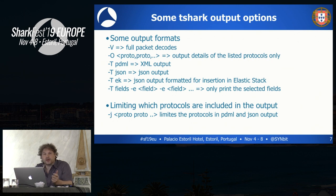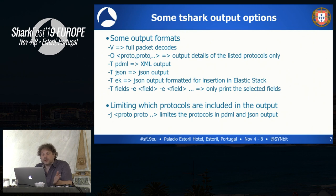If you use one of the PDML, JSON, or EK formats, you can also limit the output of the protocols to certain protocols with the minus J option. In this presentation, I will mainly use minus V and minus T fields and work with those.